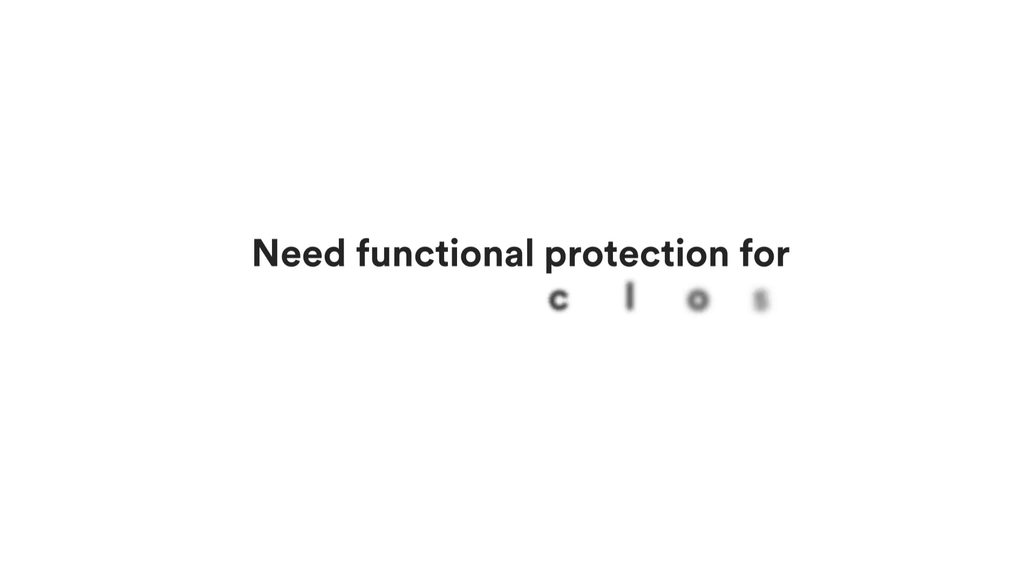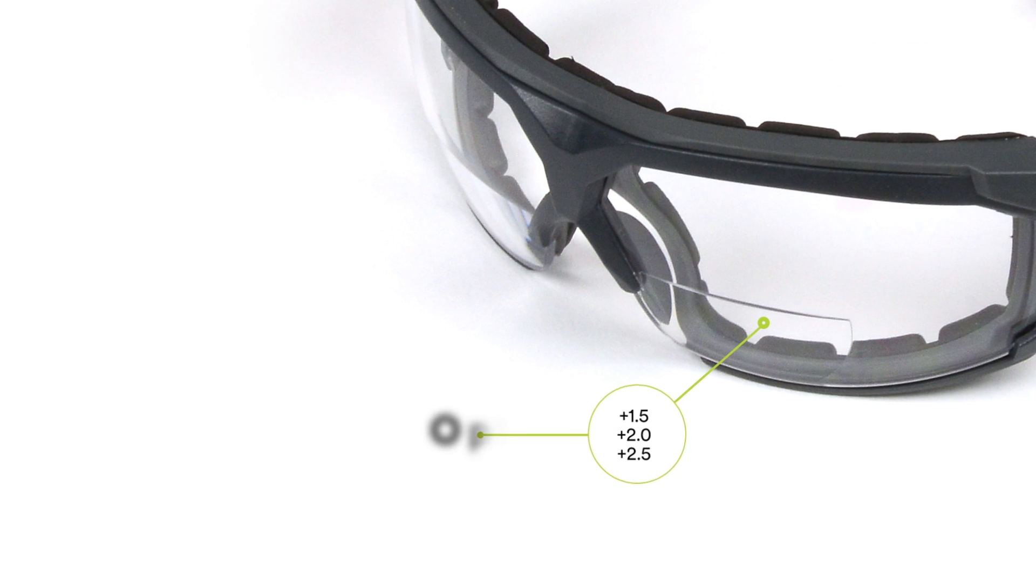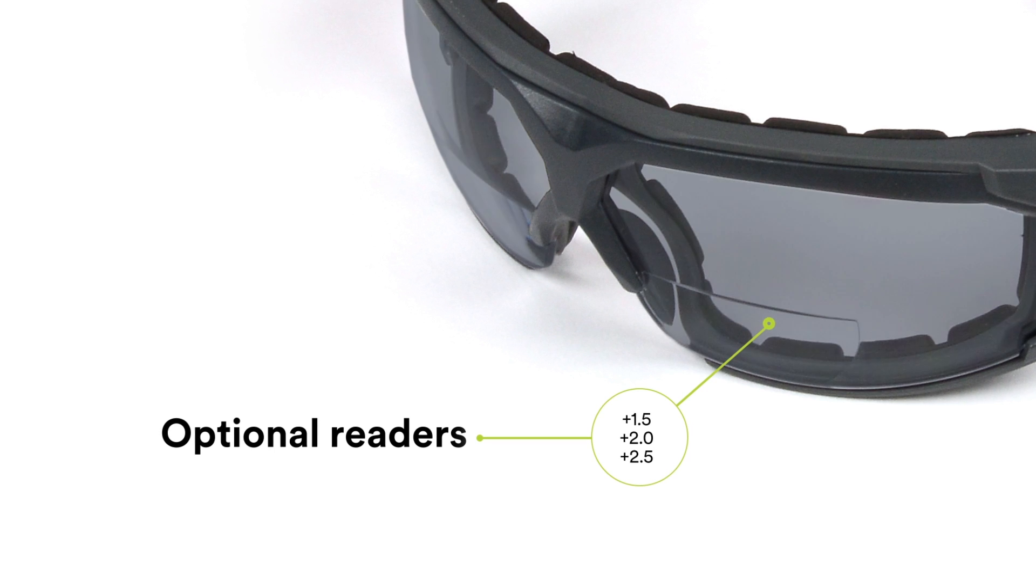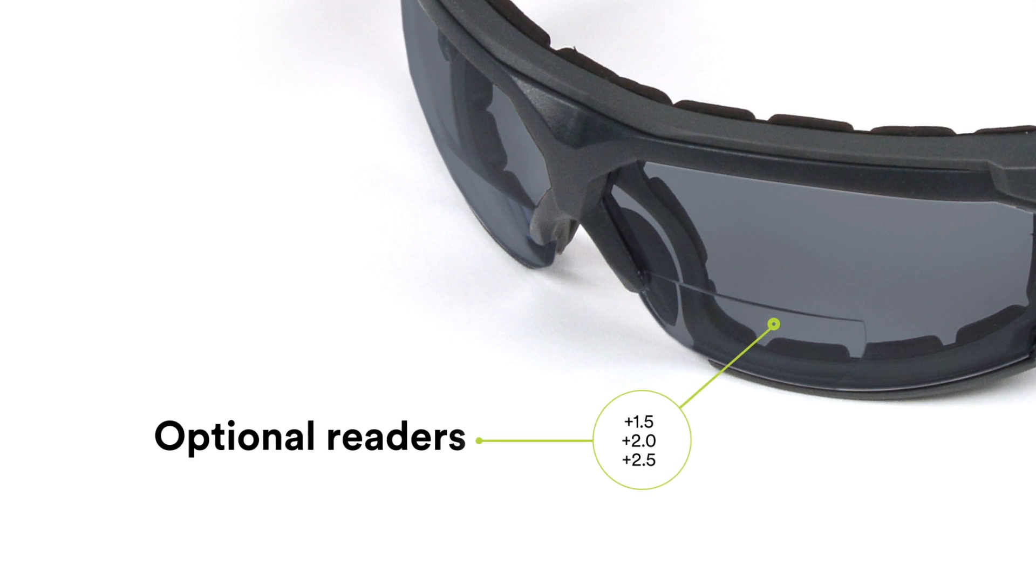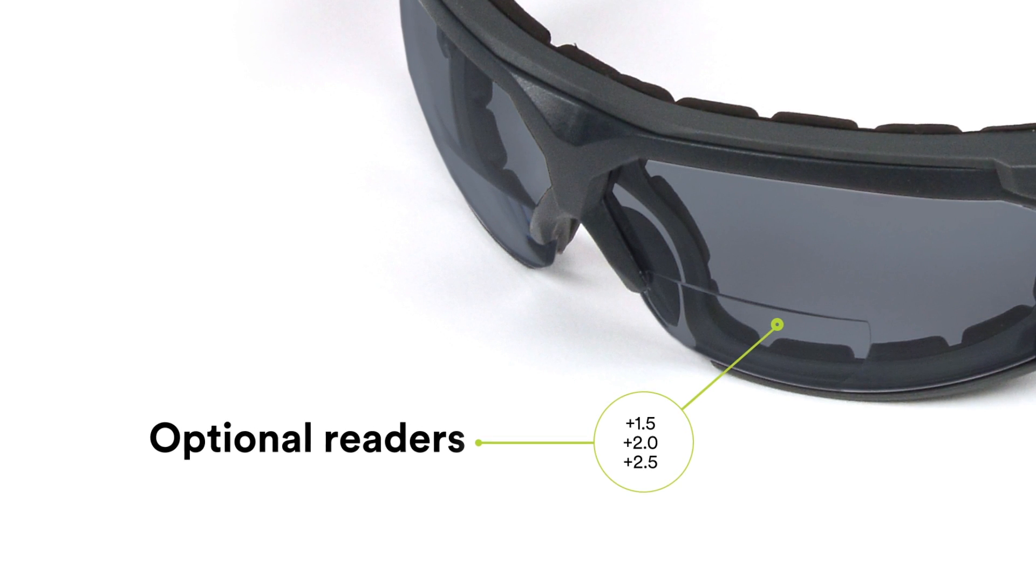Need functional protection for close-up work as well? SecureFit Protective Eyewear 600 series is available with optional readers in a range of diopters and Scotchgard anti-fog coating.